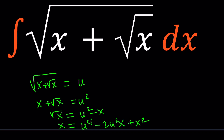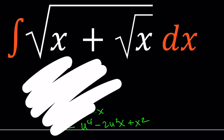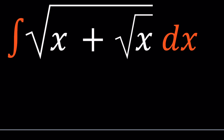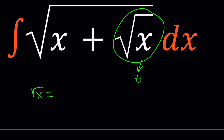So instead I tried a different approach, and I think that's going to work. That approach is just calling the square root of x, t. Why t? Because we already used u. So square root of x equals t — that's going to be my new variable. And from here, everything unrolls. Let's go ahead and see how that plays out.